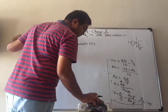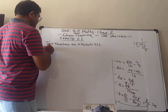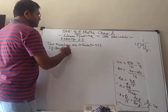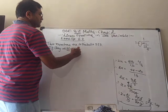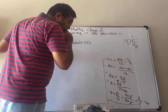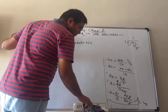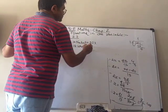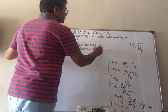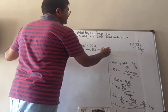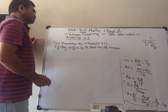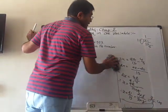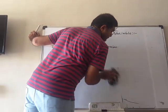Also given that if they differ by 18 — differ means when we subtract them, bigger minus smaller, the answer is 18 — we have to find both numbers.